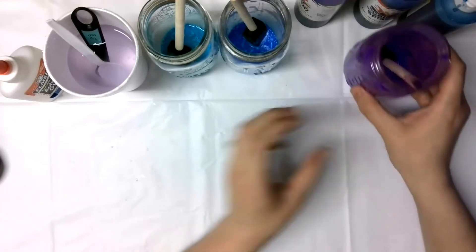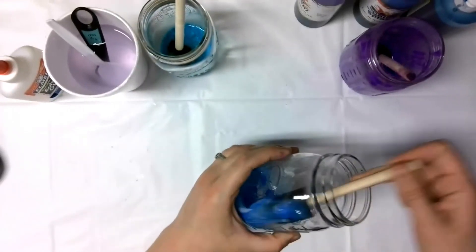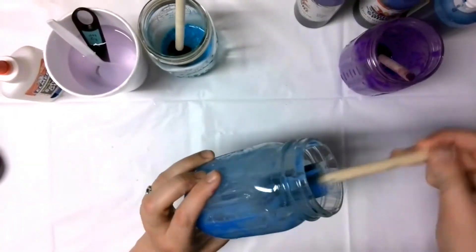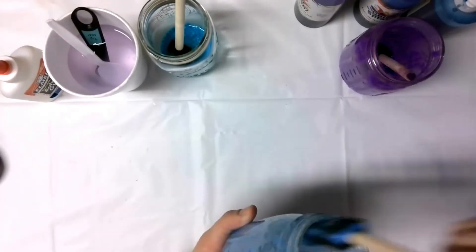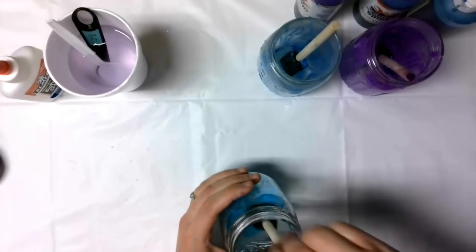So we're going to pull this up the sides of our jar. Alright, we're going to set that one aside while we work on the blue. And then our final one, the turquoise color.